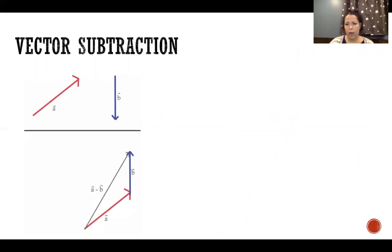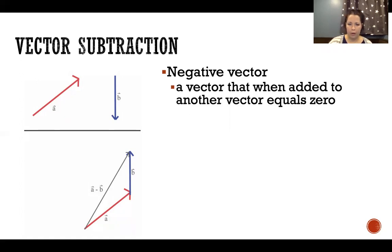Vector subtraction: essentially when we want to subtract one vector from another, we just make that vector negative and then add them together. So we have a vector that when added to the first vector equals zero. A negative vector is just a vector going in the opposite direction.